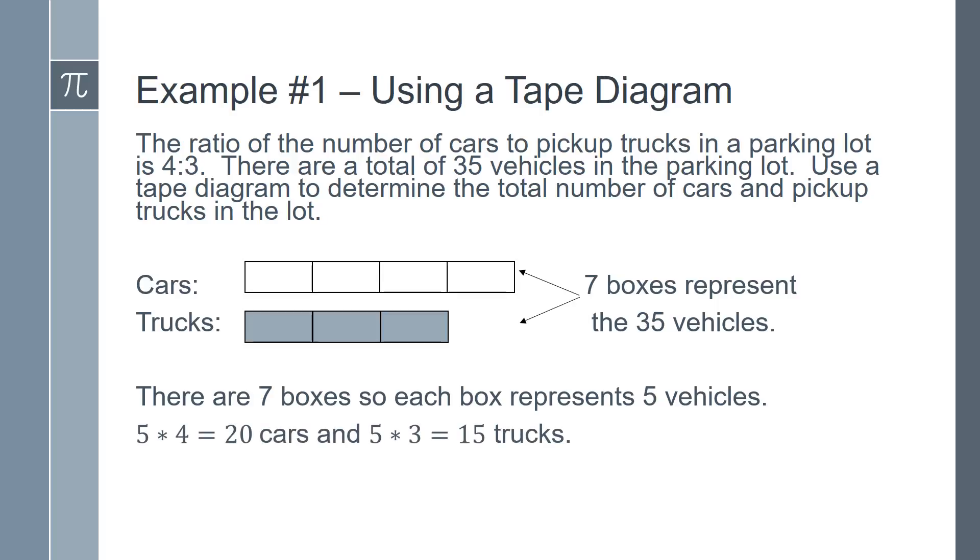So each box will represent 5 vehicles because 35 divided by 7 is 5. 5 times 4 equals 20, so there are 20 cars. And 5 times 3 equals 15. There are 15 trucks. There are 20 cars and 15 trucks in the parking lot.